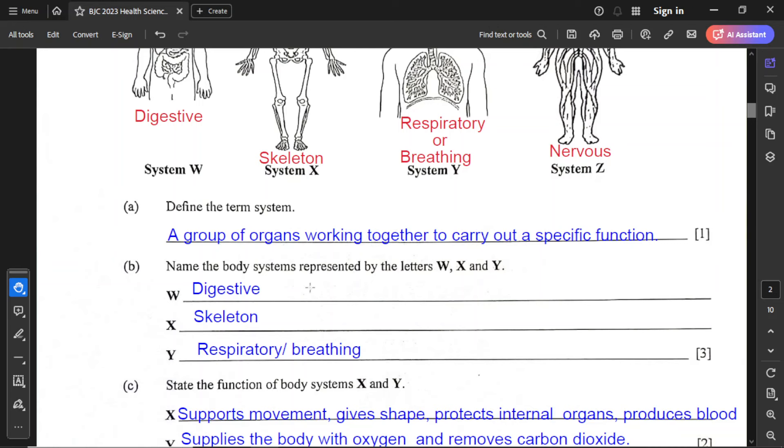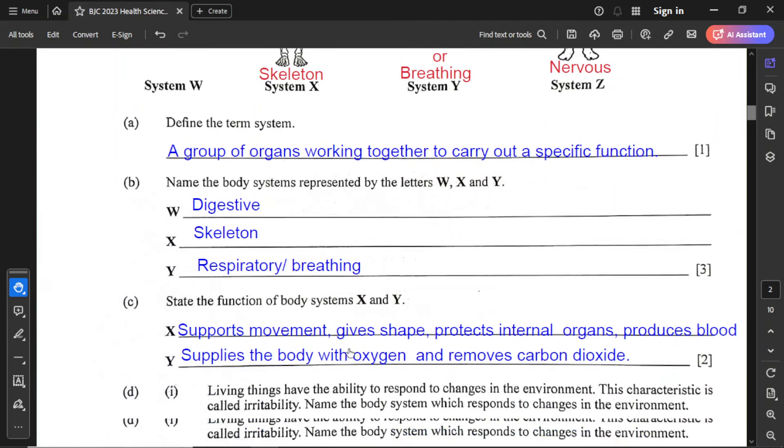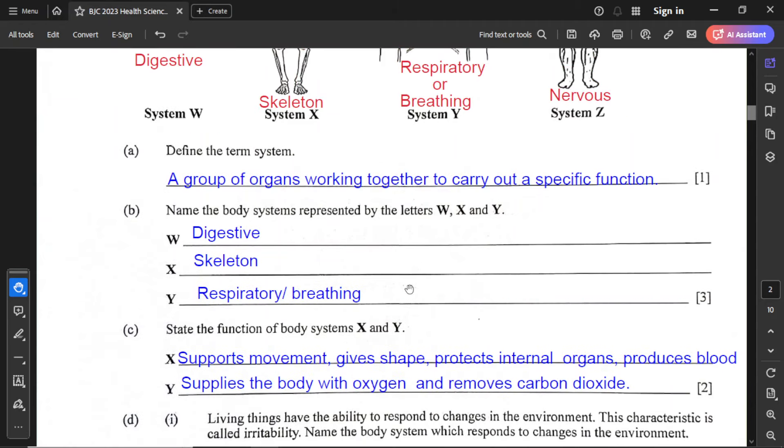For part B, name the body systems represented by the letters W, X, and Y. W is the digestive, X is the skeletal or skeleton system, and Y is the respiratory or breathing system. For part C, state the function of body systems X and Y. X is the skeletal, which has many functions including support movement, gives shape, protects internal organs, and produces blood cells. For Y, the breathing or respiratory system supplies the body with oxygen and removes carbon dioxide.